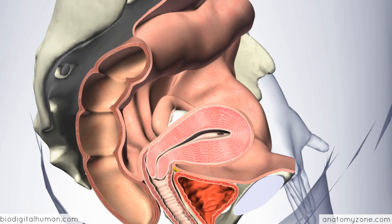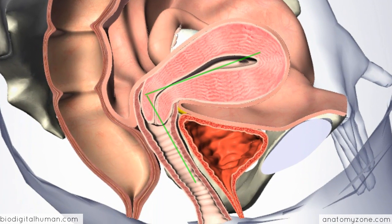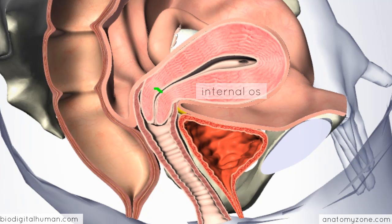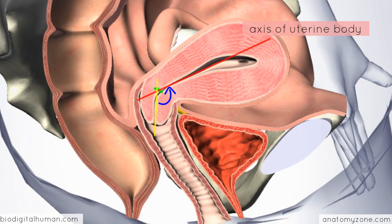Moving on to the uterus, we're looking at it from a lateral cross-sectional view. In the last tutorial, I introduced the various parts of the uterus including the fundus, the body, and the cervix, and the flexion over the bladder which we can see here. What I didn't introduce was the different axes of the uterus. At the level of the internal os, the body of the uterus is angled forward at an angle of around 130 degrees, so the axis of the uterine body lies at a 125-degree angle to the axis of the cervix. This degree of angulation is called anteflexion.